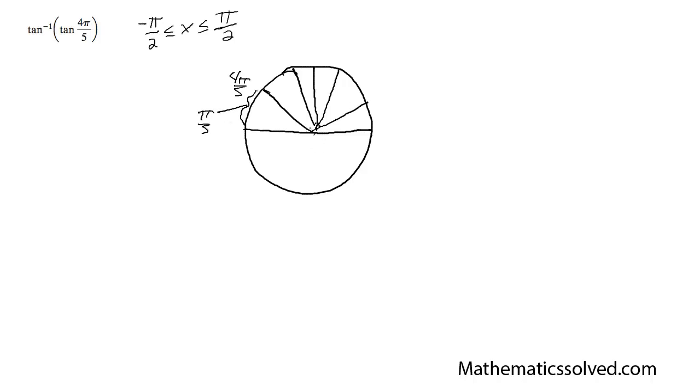The equivalent of this, because our bounds are between negative π over 2 to π over 2, we need π over 5. This is going to be the equivalent.